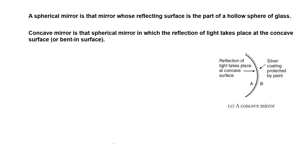A spherical mirror has a reflecting surface that is part of a hollow sphere of glass. A concave mirror is part of a sphere — if you complete the sphere you can see the full shape. It is called a concave mirror because its reflecting surface looks like a cave. The outward part of a concave mirror has a silver coating protected by paint.